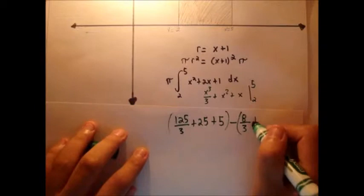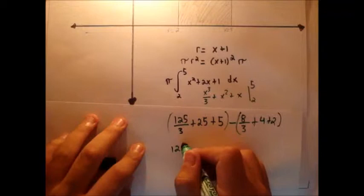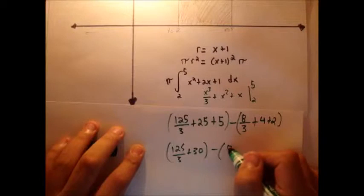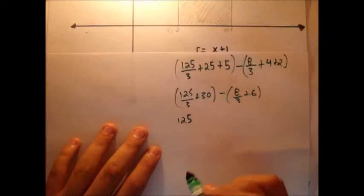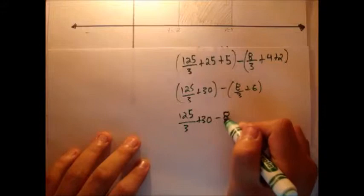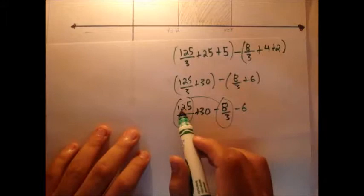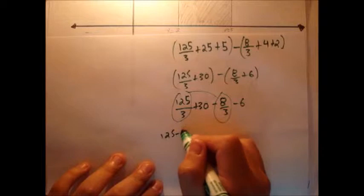Now we just have to simplify. That's 125 over 3 plus 30. And this is, let's see, 4 plus 2, 6. Let's actually expand this negative term. 125 divided by 3 plus 30 minus 8 over 3 minus 6. Now we can gather like terms. So 125 minus 8 over 3, that's just common denominators. 125 minus 8 over 3, that's just 117.